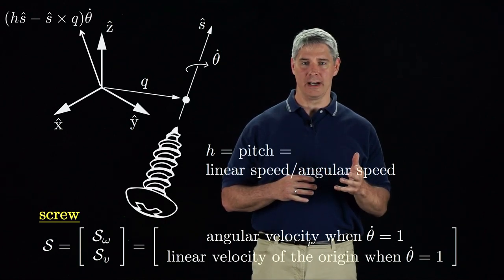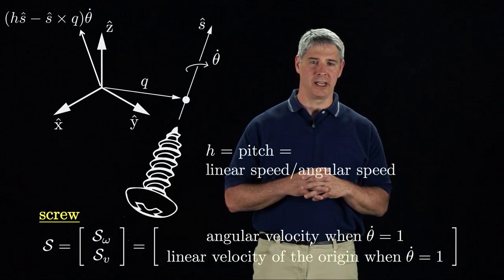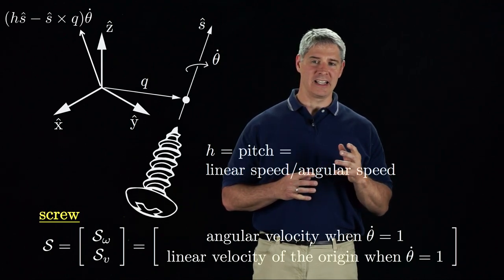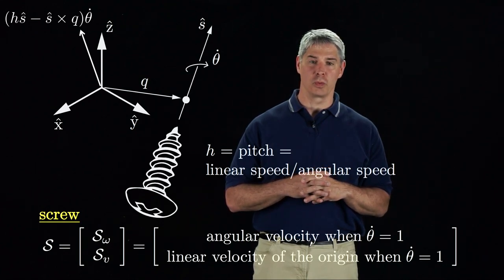consisting of S omega, the three-dimensional unit angular velocity when the rotational speed theta dot is 1, and Sv, the three-dimensional linear velocity of the origin of the frame when the rotational speed is 1.